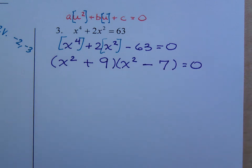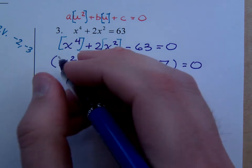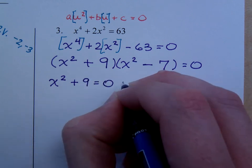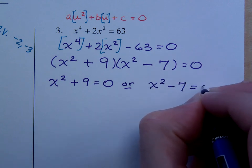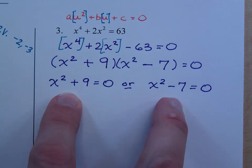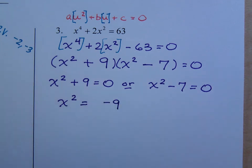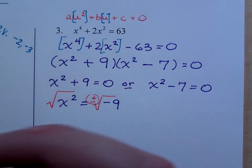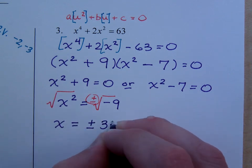What happens with the rest of this? This is factored and it's equal to 0, so we can still use the zero factor theorem. x squared plus 9 is equal to 0, or x squared minus 7 is equal to 0. These guys right here are both equations where you would use the square root property. x squared is equal to negative 9. Applying the square root property means x is equal to plus or minus 3i.